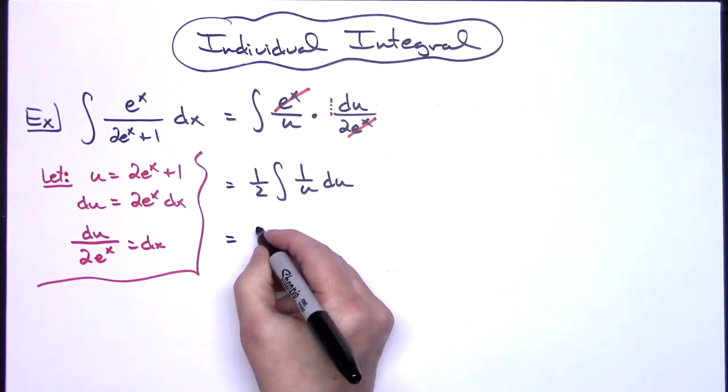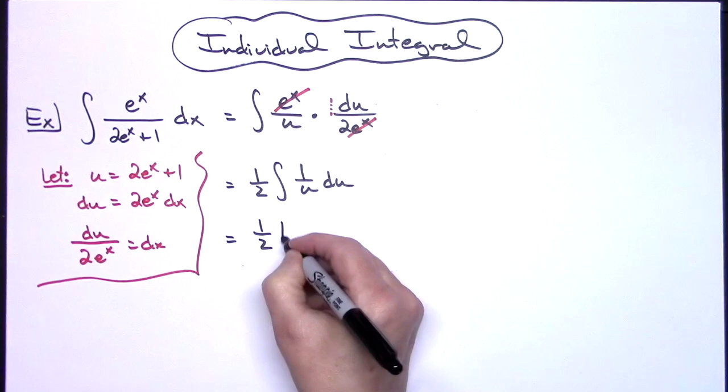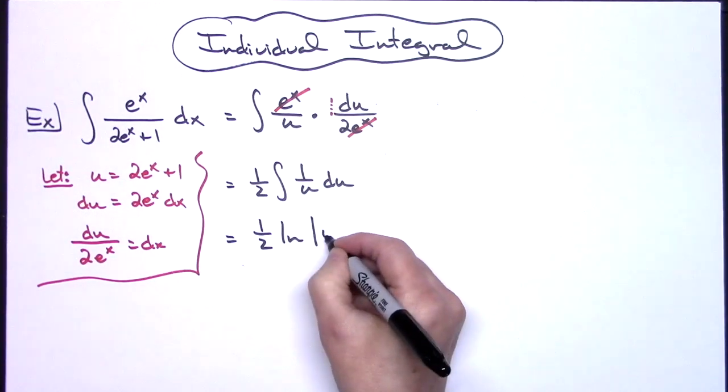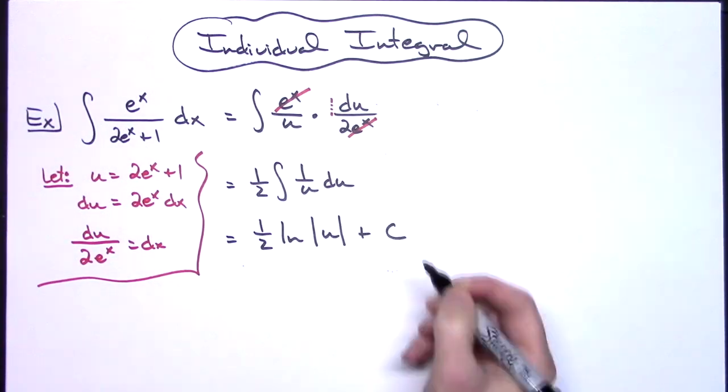So it'll be a straightforward integration here with a one half natural log absolute value of u and then a plus c.